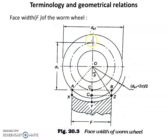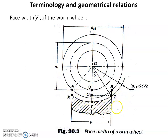From center O, the distance OA and OB represent the addendum radius (DA1/2), and OC represents the pitch circle radius (D1/2). The arc XYZ corresponds to the face width F of the Worm wheel. These geometric constructions form the basis for deriving the face width formula.